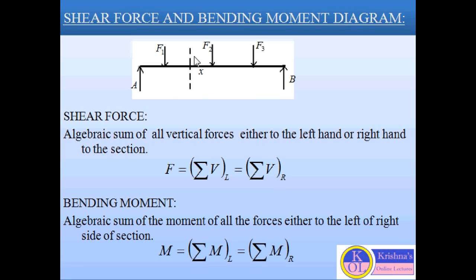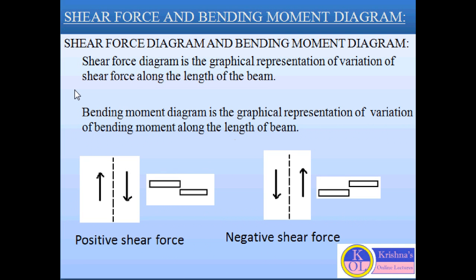Similarly, the moment generated at the section X is called the bending moment. So the bending moment is also the algebraic sum of the moment of all forces acting on the beam, either to the left side of the section or the right side of the section. Here is the mathematical equation for the bending moment. So as per this, we can define the shear force diagram and the bending moment diagram.